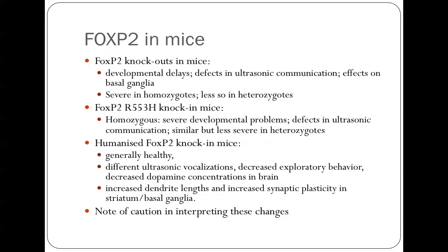Scientists have followed this up in mice. Knockout mice show severe developmental delays and defects in ultrasonic communication — mice squeak to their mothers in ultrasonic frequencies, and there are defects in that communication. Homozygous knockouts are actually lethal in the womb; heterozygous mice survive but have these defects. Then they made a knock-in mouse with the R553H change corresponding to the mutation seen in the KE family with language difficulty — again finding severe developmental problems and defects in ultrasonic communication.